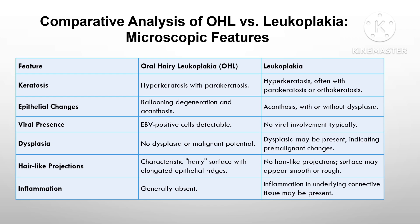OHL usually shows mild or absent inflammation, whereas leukoplakia may present with chronic inflammation. OHL often features lymphocytic infiltration, while sub-epithelial changes in leukoplakia are minimal unless dysplasia is present. In OHL, the basement membrane is usually intact, whereas in leukoplakia it may show breakdown in cases of high-grade dysplasia.